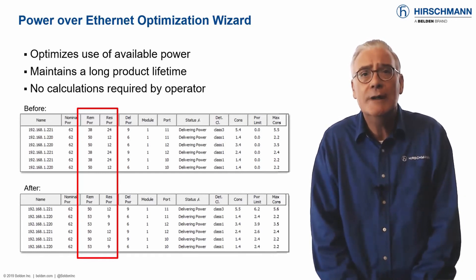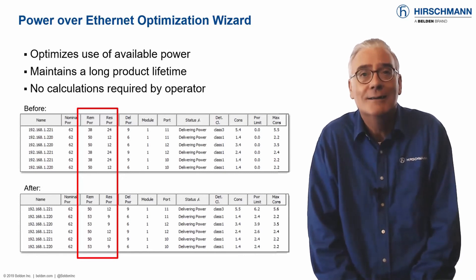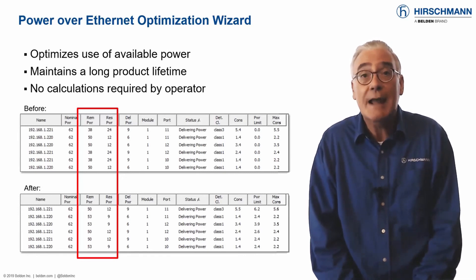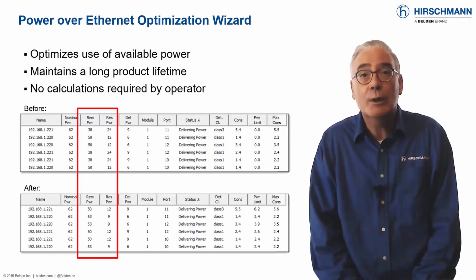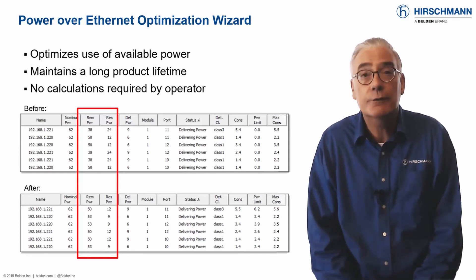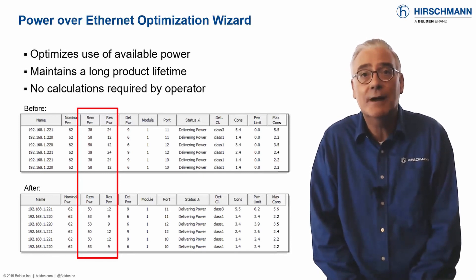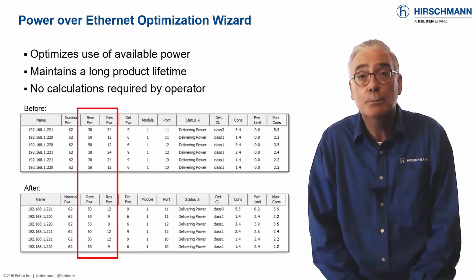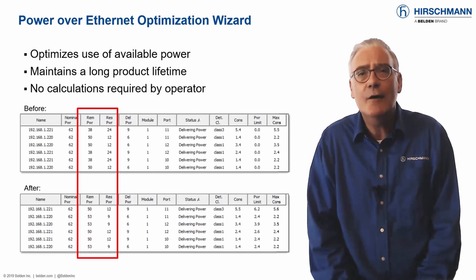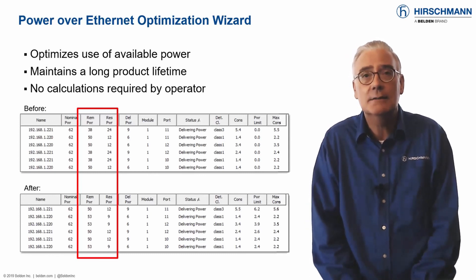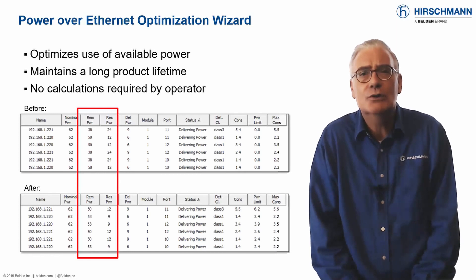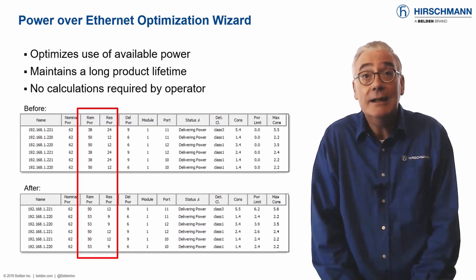Which means you need to maximize the use of available power. Industrial HiVision includes a PoE wizard. This wizard will override the standard PoE classes. With no intervention from an administrator, the wizard will calculate the maximum power required by each device on the network. It will allocate the relevant power to each port. Remaining power is then available for use by other devices. This is the most efficient use you can make of limited PoE, and you can configure it with just a couple of clicks.